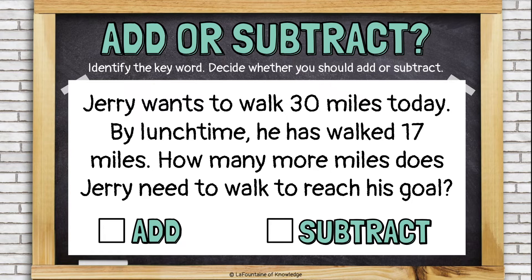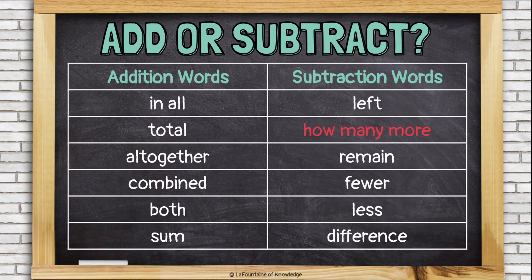Jerry wants to walk 30 miles today. By lunchtime he's already walked 17 miles. How many more miles does Jerry need to walk to reach his goal? Here we have the words 'how many more.' How many more usually means we need to subtract. We know the total number of miles and we know how many he's already walked. So if we find the difference between those two numbers by subtracting, we can find out how many more miles he needs to walk. How many more is subtraction.